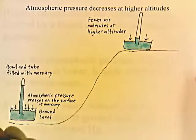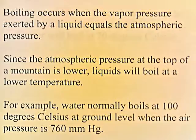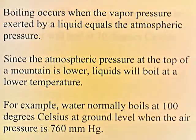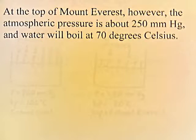Boiling occurs when the vapor pressure exerted by a liquid equals the atmospheric pressure. Since the atmospheric pressure at the top of a mountain is lower, liquids will boil at a lower temperature. For example, water normally boils at 100 degrees Celsius at ground level when the air pressure is 760 millimeters of mercury. At the top of Mount Everest, however, the atmospheric pressure will be about 250 millimeters of mercury and water will boil at 70 degrees Celsius. When the atmospheric pressure is less, you don't need the water to be as hot for it to start to boil.